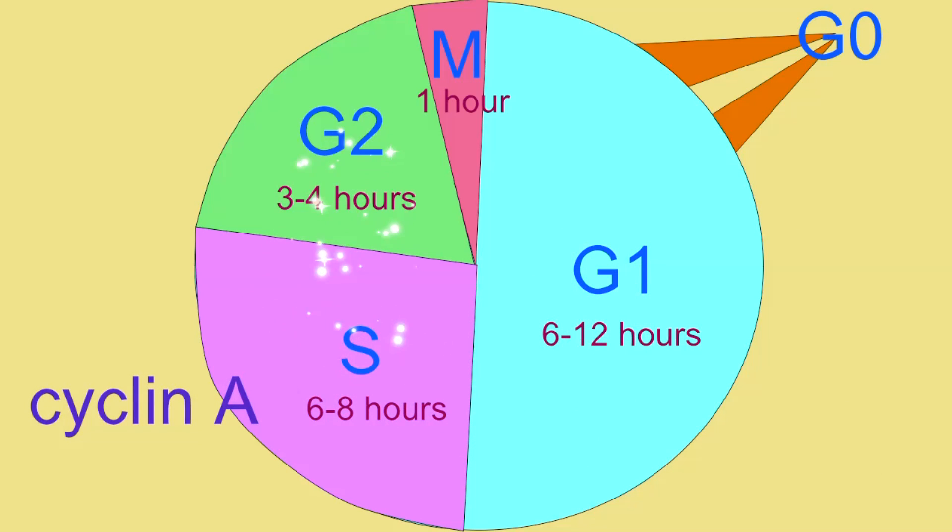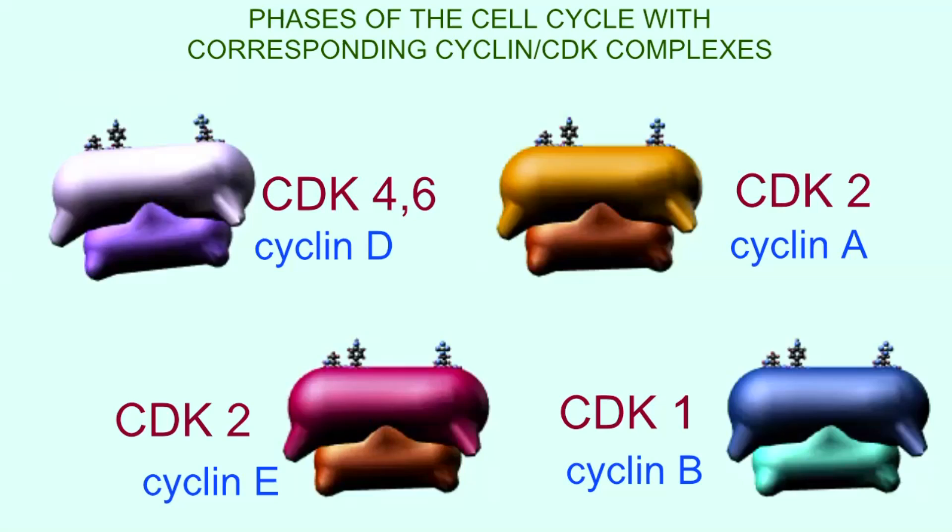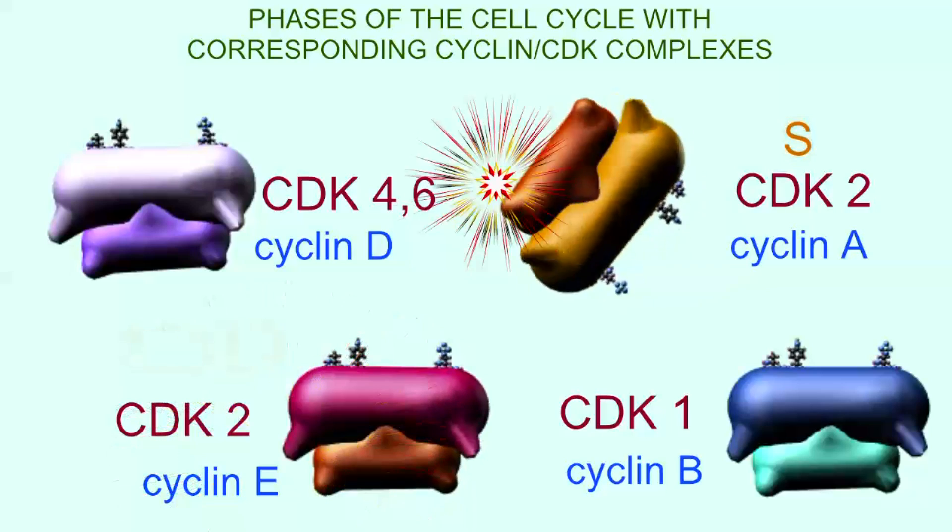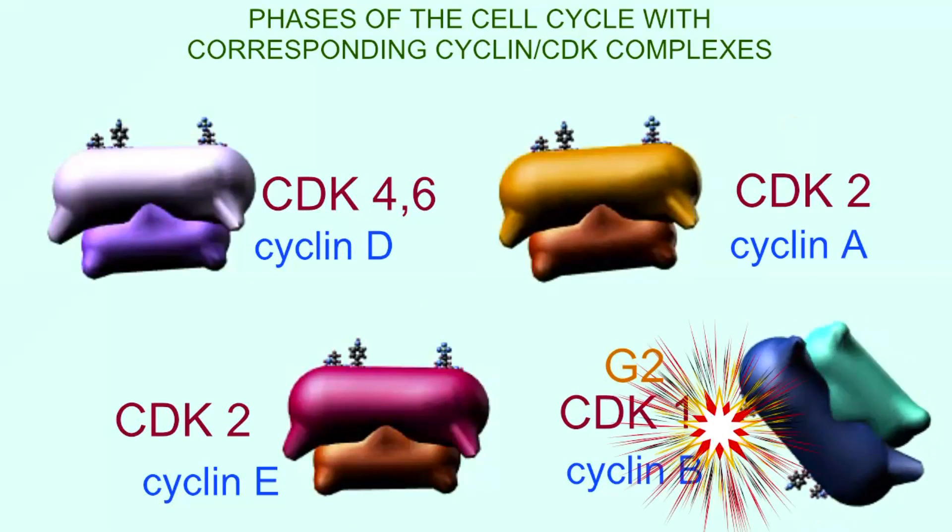There are different cyclins for different stages of the cell cycle, and production of new cyclins help to promote migration through the cell cycle as cells divide.